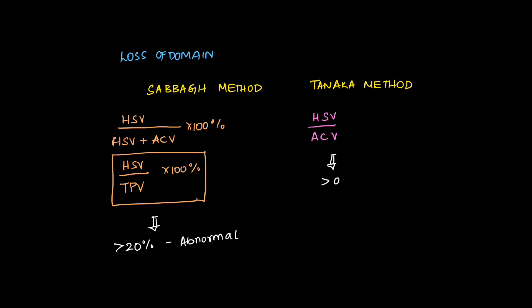In Sabag method, more than 20% is abnormal. In Tanaka method, more than 0.25 is abnormal value. What does 20% loss of domain mean?